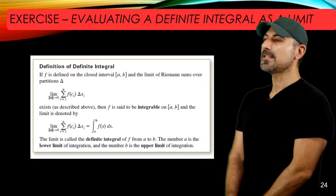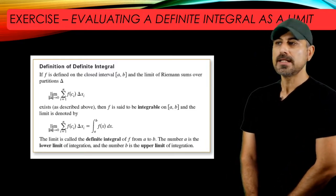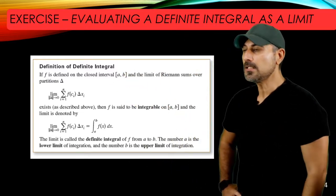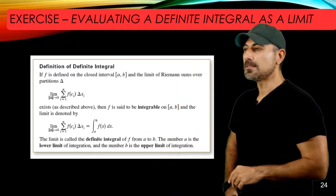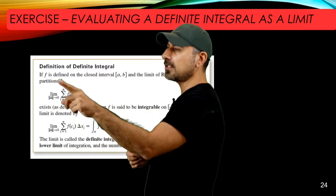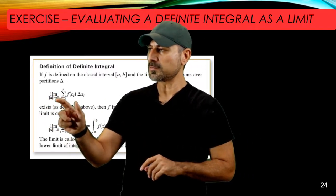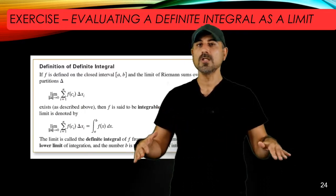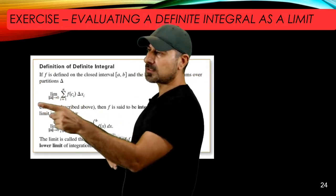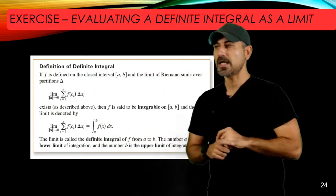Let's remember the definition of the definite integral. We start with a function f on a closed interval, then take a partition delta of the closed interval [a, b], and look at the limit of the Riemann sums over that partition. The maximum length of each sub-interval goes to zero, and this is equivalent to saying the limit as n goes to infinity of the sum from i=1 to n of f(ci) · Δxi.